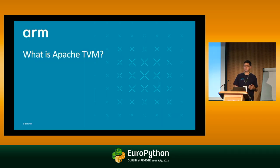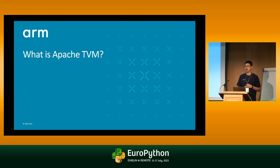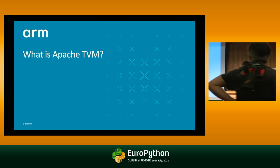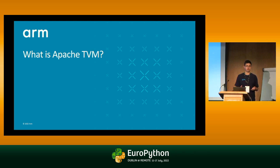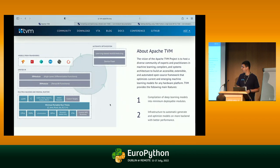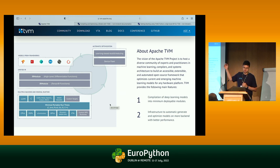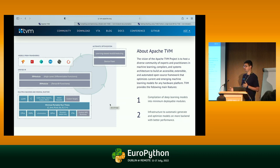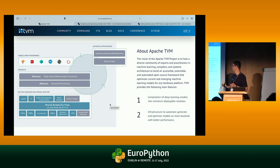I'd like to explain what Apache TVM is as a project and what gap it fills. The ecosystem for neural networks and deep learning is quite complex, and this picture summarizes it very well. From the top side, you can see that lots of groups are concerned with implementing input frameworks and operators so that you can create your own neural network models — TensorFlow, Keras, MXNet, PyTorch.